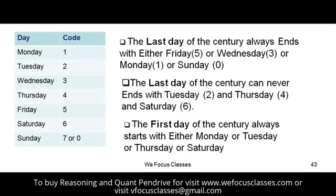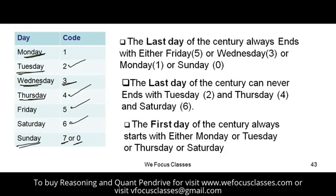After knowing the calculations, assign a code to each day of the week: 1 odd day means Monday, 2 means Tuesday, 3 means Wednesday, 4 means Thursday, 5 means Friday, 6 means Saturday, and 7 (or 0) means Sunday. Don't apply these codes to the previous sessions — this is exclusively for when a date is given and you are asked to find the day.